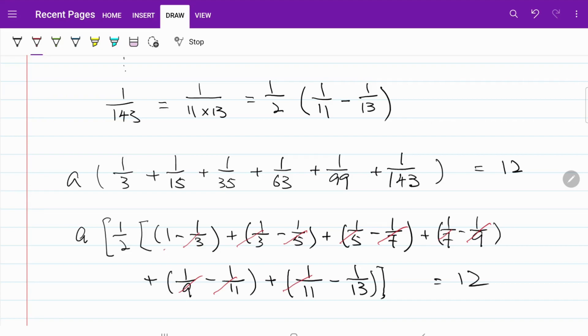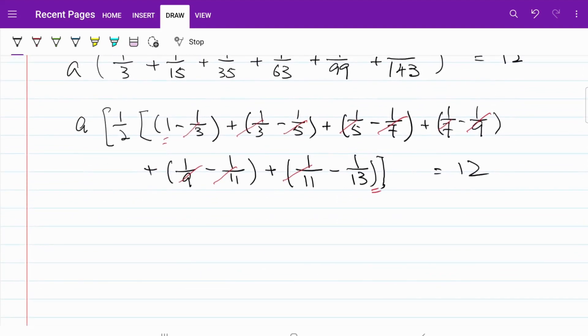Essentially, what we are left with is the beginning and the end. So what we have is actually a telescopic series where the middle terms cancel each other and we are left with the front and the back just like a collapsing telescope. So now what I have on the series can be simplified as 1 over 2 multiplied by A multiplied by 1 minus 1 over 13 is equal to 12.